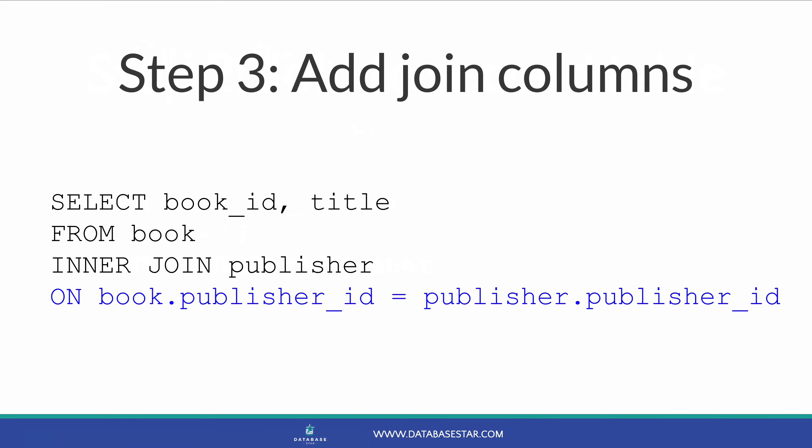These will be the columns in each table that store the same value. This is often the foreign key in one table and the primary key in the other. For example, we want to join book and publisher. We specify ON, then book.publisherId equals publisher.publisherId. This means we're joining the two tables on the publisherId column.